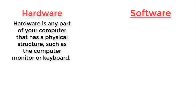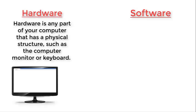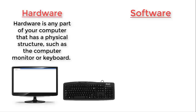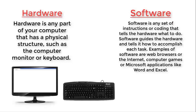Let's look into the two terms hardware and software. Hardware is any part of your computer that has a physical structure, such as the computer monitor or keyboard. Software is any set of instructions or coding that tells the hardware what to do. Software guides the hardware and tells it how to accomplish each task. Examples of software are web browsers, the internet, computer games, or Microsoft applications like Word or Excel.